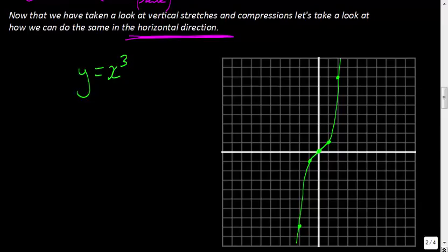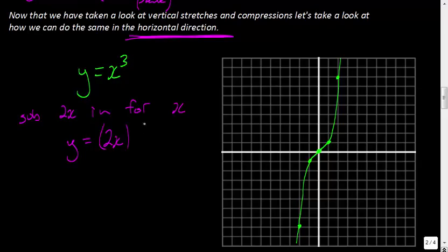Let's do this one in pink. Let's say we substitute 2x in for x. So this 2x goes in for x, and we'd have the function y = (2x)³. Now what I want you to understand is that this function actually becomes 8x³, because 2³ = 8 and x³ is just x³.